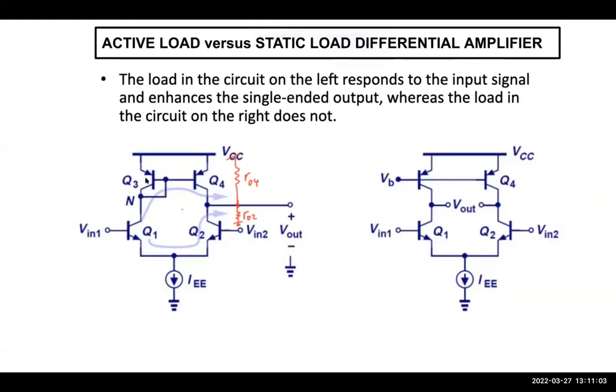As you can see, this is active load and this is static load. Thing being the same, if we take the output here, this or this, then this will have two times of gain. Because we get this current copied here. So in addition to this current here, we don't have that mechanism. We only have one current. So now we have two times of the gain of this circuit.